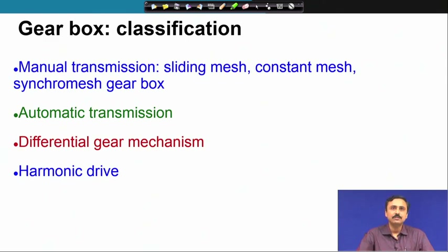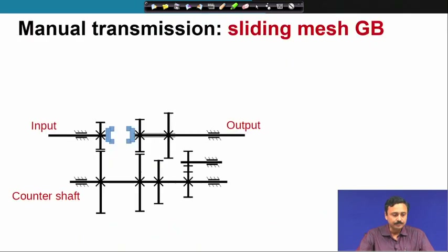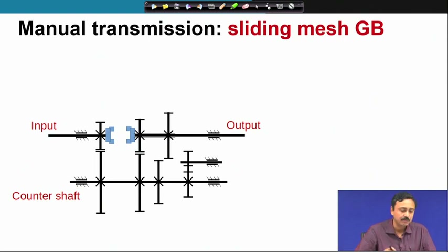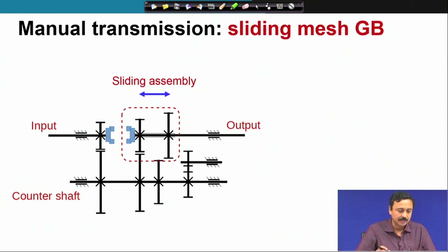We are going to restrict ourselves to manual transmission and automatic transmission. We will start with the manual transmission using the sliding mesh gearbox. Here is a schematic of the sliding mesh gearbox. In this, there is a part of this gear box which is sliding.